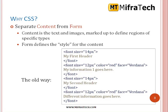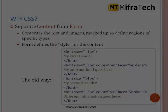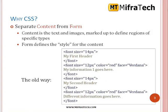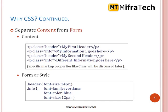Content is the text and images marked up with defined regions of a specific type. When separating content and form — the new way — we write the HTML document in one file and the style in another file, and both are linked together. In the older way we wrote inline code, declaring font size where the paragraph starts. In the new approach, content goes in one file and style in another, and both are linked together.